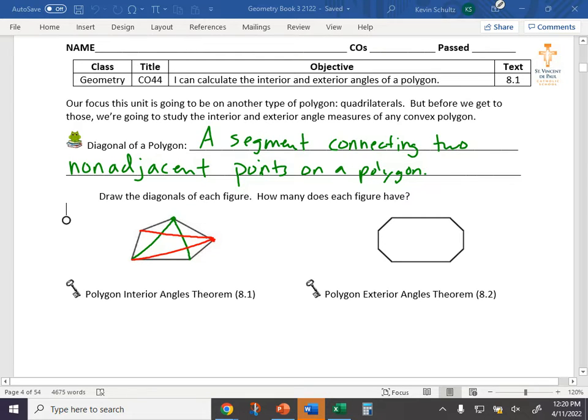From that first point, there are two diagonals that can be drawn, because any other segment connecting points will be connecting adjacent points. So I go to my next point, and I can draw a diagonal down here. I can draw a diagonal right there. Two non-adjacent points and segments connecting them.